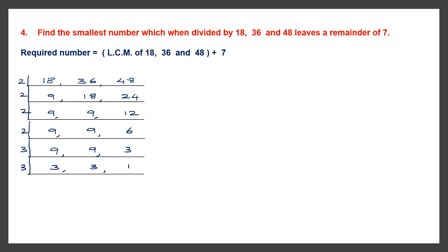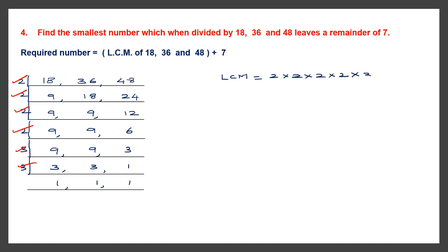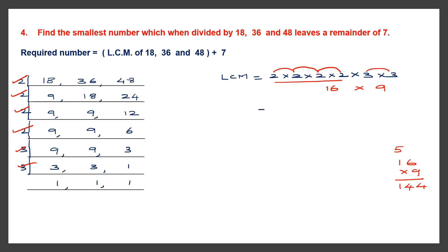Again we divide by 3: 3 ones are 3, 3 ones are 3, and we bring down 1. Now let's find the LCM. How many 2s are there? 1, 2, 3, 4 — there are four 2s. Then we have two 3s: 3 into 3. Let's multiply: 2 twos are 4, 4 twos are 8, 8 twos are 16. So 16 into 9 — 9 sixes are 54 carry 5, 9 ones are 9 plus 5 is 14. So LCM is 144.